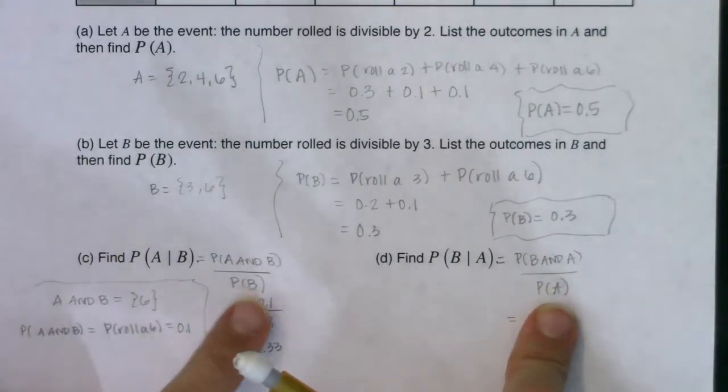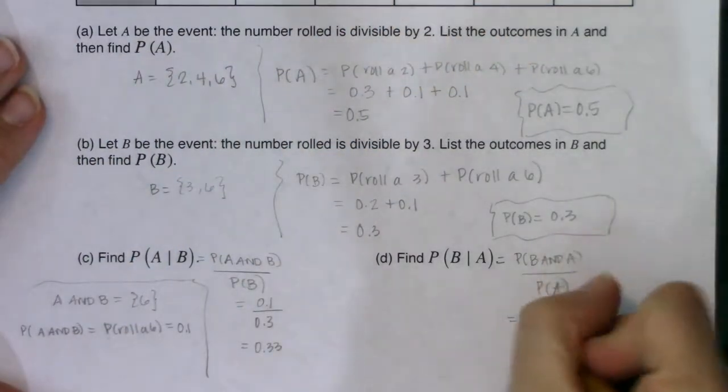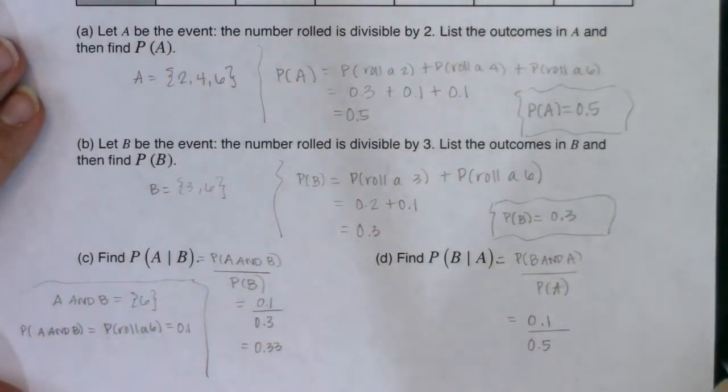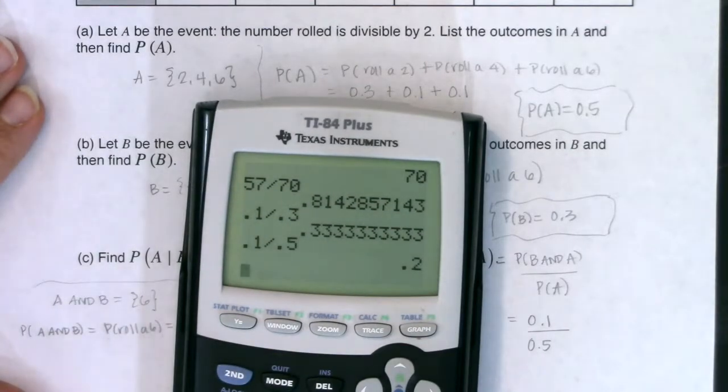So our numerators are not going to switch. This is still going to be 10%, just like it was 10% over here. But our denominators are different, because you see it's the probability of B over here, or it's the probability of A over here. We found the probability of A back in part A, so this is 0.5. And when I take those two numbers in ratio, when we take 0.1 divided by 0.5, we're actually looking at 0.2.